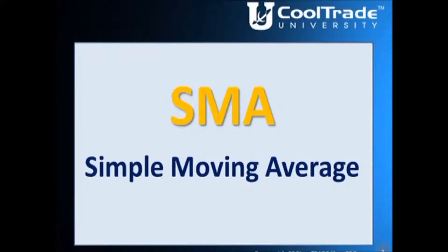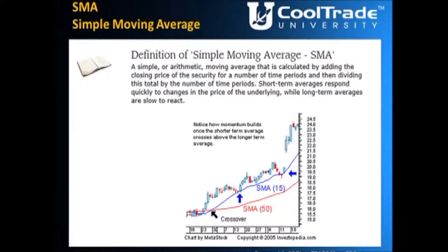The first one we're going to talk about is SMA, or Simple Moving Average. A lot of things are based on this, so we're going to start here. A simple or arithmetic moving average is calculated by adding the closing price of the security for a number of time periods and then dividing this total by the number of time periods. Short-term averages respond quickly to changes in the price of the underlying, while long-term averages are slow to react. Looking at that chart, the textbook definition of moving average is an average price for a security using a specified time period.